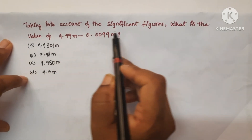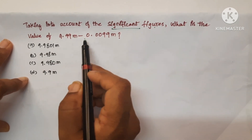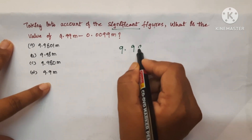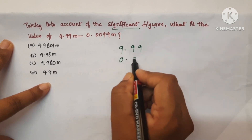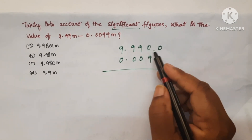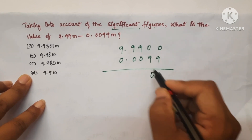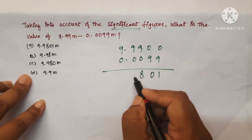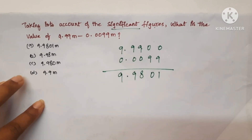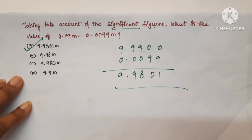Next question: Taking into account significant figures, what is the value of 9.99 m − 0.0099 m? Writing 0.0099 with trailing zeros: 9.99 − 0.0099. Performing the subtraction: 9 − 9 is 0 carry, 9 − 9 is 0, and working through the digits gives 9.9801. Option A is the correct answer.